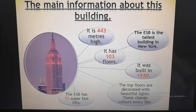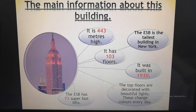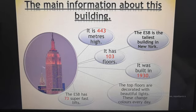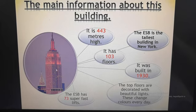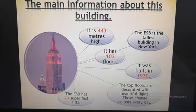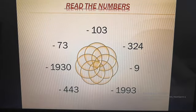The Empire State Building has 73 super-fast lifts — elevators. The top floors are decorated with beautiful lights, as you can see in the picture. These change colors every day.